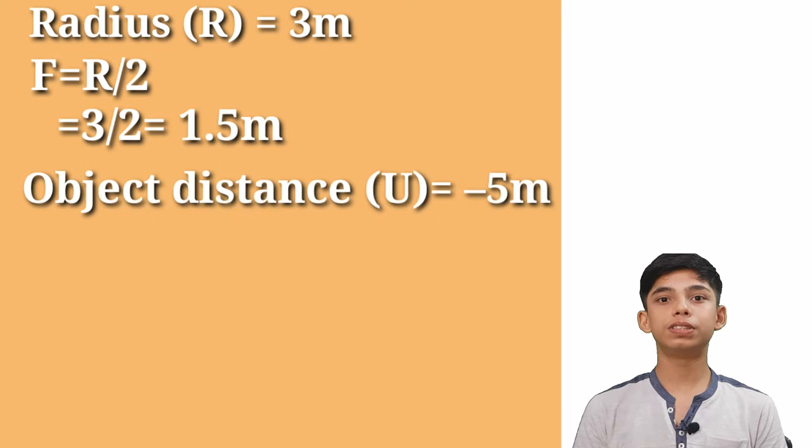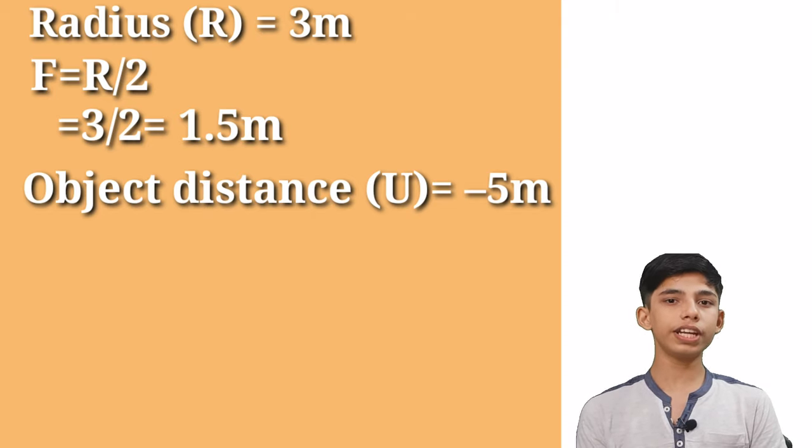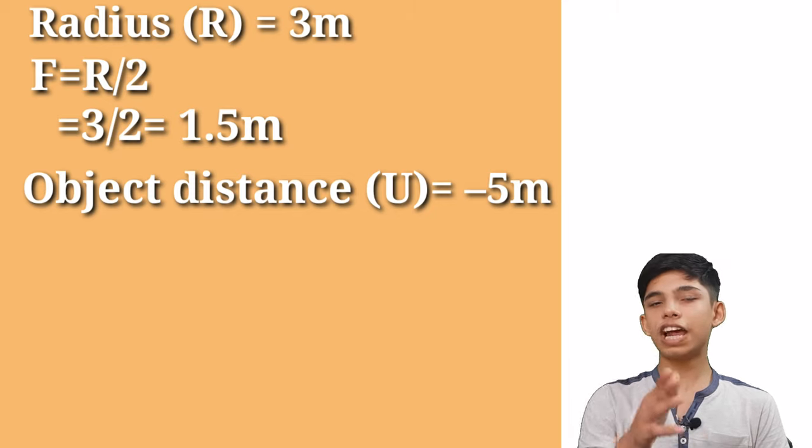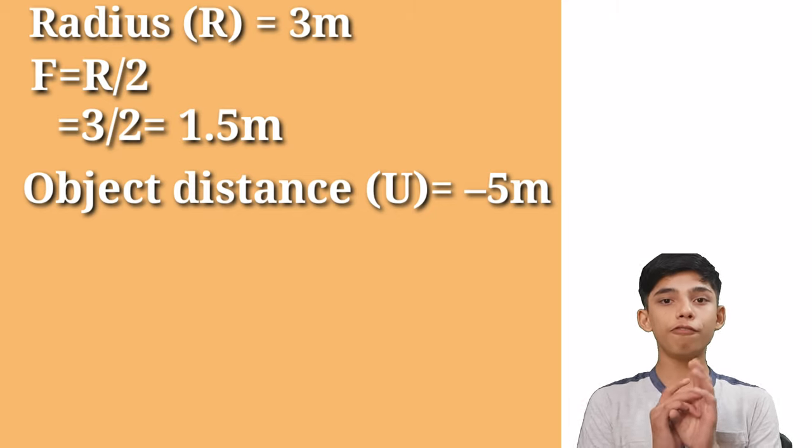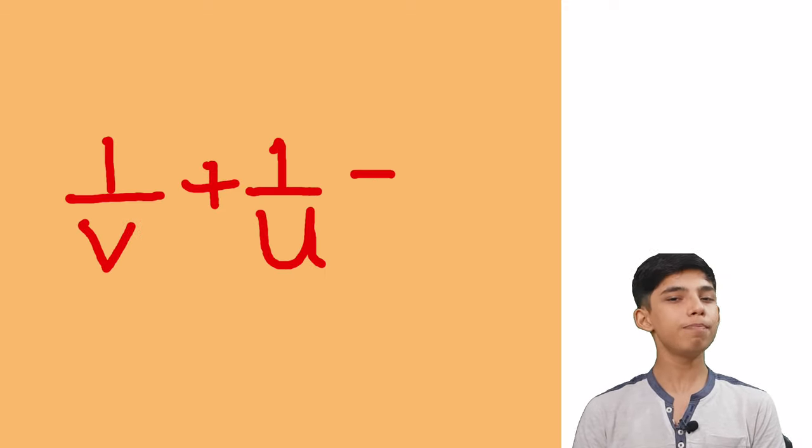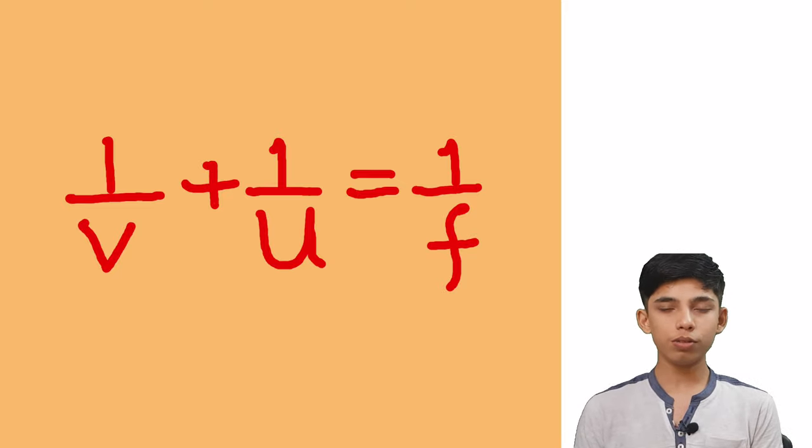Now we have our object distance which is 5 meters. Again positive or negative? Negative because our object is on the left side and left is negative. Great. Now we have to calculate the value of V or the image distance. And for this, we have a very special formula, mirror formula. What is this? Yes, 1 by V plus 1 by U equals to 1 by F. Now let's put our values here.